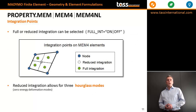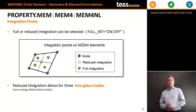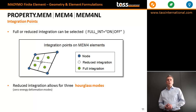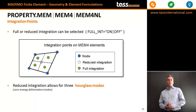The mem4 property variants are property mem4 and mem4 nonlinear. For 4-node membrane elements, you can have reduced or full integration. With reduced integration, there is only one integration point at the center of the element. With full integration, you have 4 integration points divided over 4 quarters of the element. It should be noted that reduced integration will allow for 3 so-called hourglass modes, which we will come back to later.